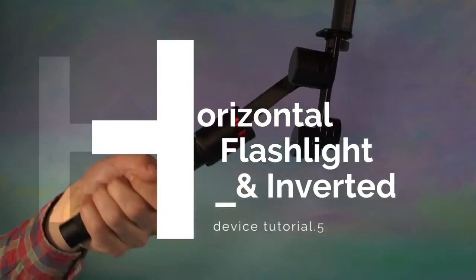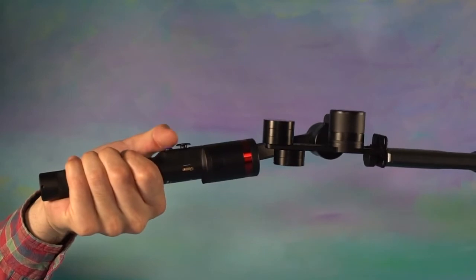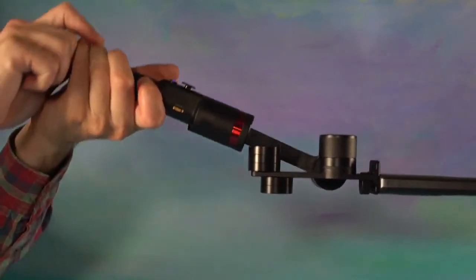Horizontal, flashlight, and inverted. Rotate your wrist to a 45 degree angle. The stabilizer will switch the position of the camera automatically to the horizontal/flashlight position.